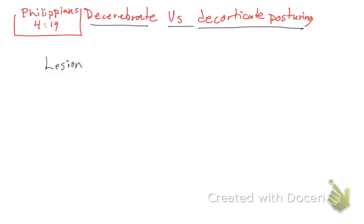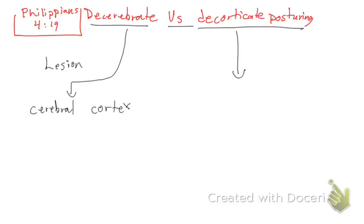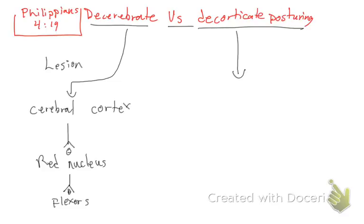So here we have the decerebrate, and here we have the decorticate. For the decerebrate, we start with the cerebral cortex. Then we have the red nucleus. You stimulate it — that should be positive — and then it connects to the flexors.